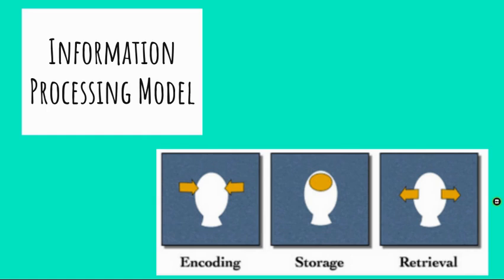We are going to get more in-depth throughout this unit on ways in which we can better encode and get information into our brain, what types of storage we have in our memory system, and then retrieval — what impacts our ability to get the information out, how reliable that information is from our long-term memory, ways to improve it, and some of the negatives that come from individuals who do not have a good retrieval system.